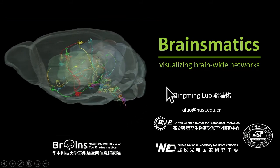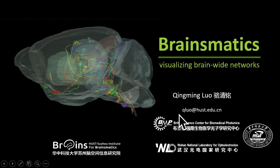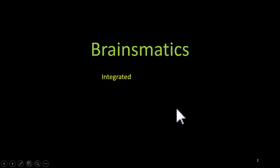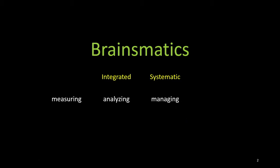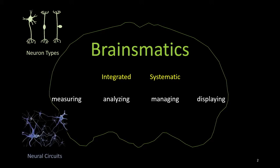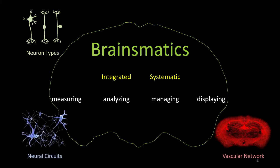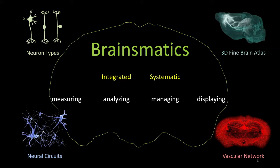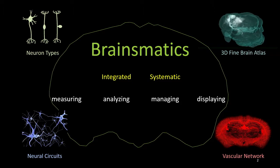Not only the neural networks, but also the vascular network. I'm introducing a new term which refers to the integrated systematic approach of measuring, analyzing, managing, and displaying brain-wide spatial data with high voxel resolution, with global position of the neural types, neural circuits, vascular networks, and the 3D fine brain atlas. Brain semantics makes it possible to better decipher brain function and disease.